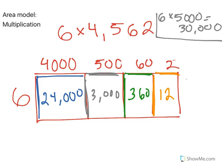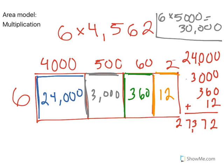Now that I have all of the partial areas, I'm going to add them all together to find the total area, which is also my product. 24,000 plus 3,000 plus 360 plus 12 equals 27,372, which means that 6 times 4,562 equals 27,372.